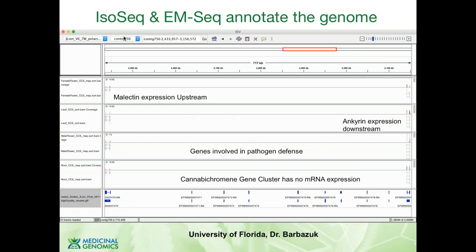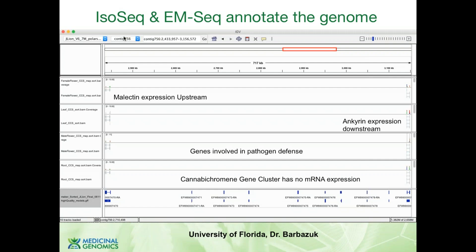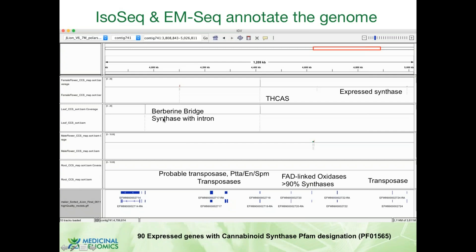Here's a really interesting region: the cannabichromine gene cluster, where there's absolutely no RNA expression in four different tissues surveyed. Interestingly, on the sides of this gene cluster are genes involved in pathogen defense — we didn't know this until this genome was contiguous. There's anchored expression and melectin expression both up and downstream of the cannabichromine gene cluster. Cannabichromine is known to be an antiseptic compound, so it's probably not surprising it's found inside a region with other pathogen defense genes. Looking at the THC synthase region, we have several other THC synthase-like genes scattered around the genome expressing in a tissue-specific manner. There's a berberine bridge synthase gene that actually has an intron — we didn't think cannabinoid synthases had introns, but this one does and it is in frame.